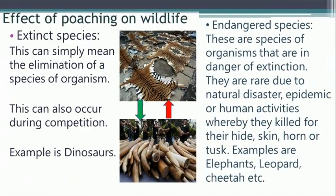Let's talk about the effects of poaching. Poaching — the illegal killing of animals — can lead to two things. Number one: it can lead to extinction. Number two: it can lead to the endangering of organisms. Extinction simply means the elimination of a species of organisms from the environment, so that they no longer exist. This can also occur as a result of competition. A common example of extinct organisms is the dinosaur, which used to exist but no longer does.